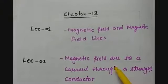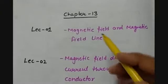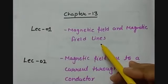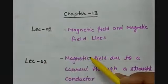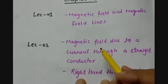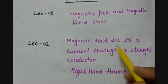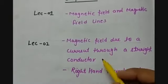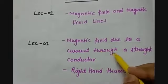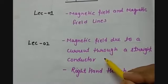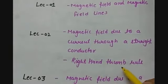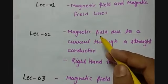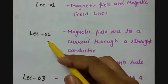Chapter number 13 has many topics. The first topic is magnetic field and magnetic field lines, which we are going to cover in lecture number 1, the same lecture we are in now. The next topic will be magnetic field due to a current carrying conductor, or magnetic field due to a current through a straight conductor, and also the right hand thumb rule used to find the direction of the magnetic field generated around a conductor. That we will cover in the second lecture.